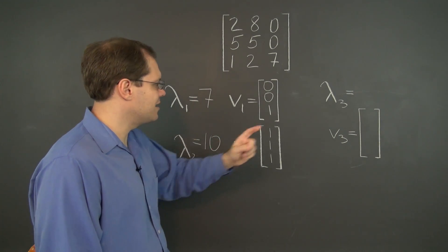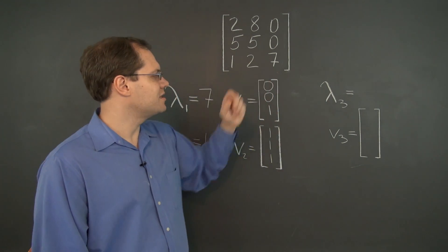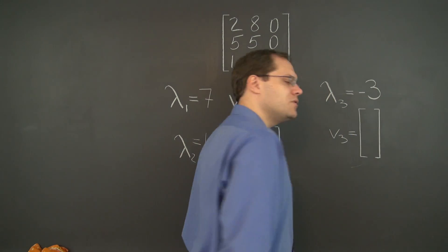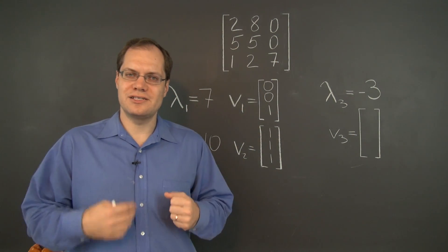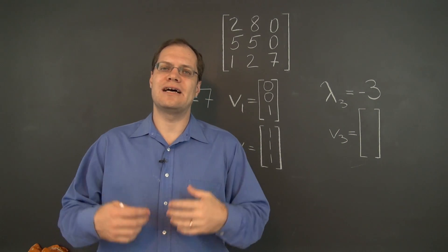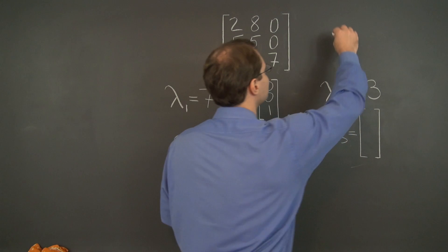So this one must be minus 3, so that 7 plus 10 minus 3 is the trace. And we do not know from the trace alone the corresponding eigenvector, so we still have a little bit of work to do.